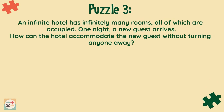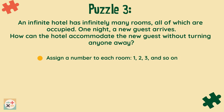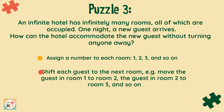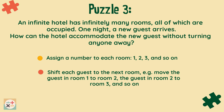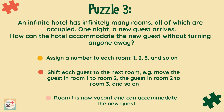Puzzle 3. An infinite hotel has infinitely many rooms, all of which are occupied. One night a new guest arrives. How can the hotel accommodate the new guest without turning anyone away? Pause the video now to solve it yourself. Check out our video about the infinite hotel paradox for a visual demonstration of the solution. Firstly, assign a number to each room: 1, 2, 3 and so on. Shift each guest to the next room — for example, move the guest in room 1 to room 2, the guest in room 2 to room 3, and so on. Room 1 is now vacant and can accommodate the new guest.